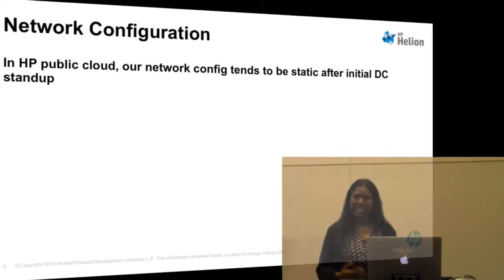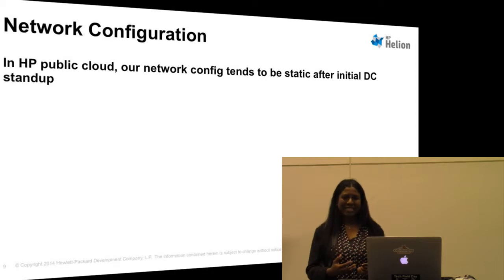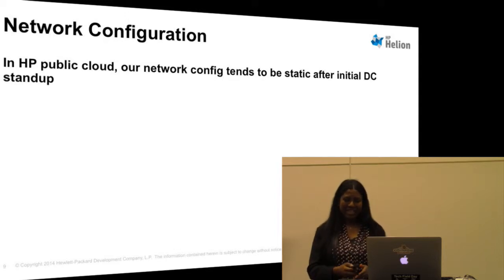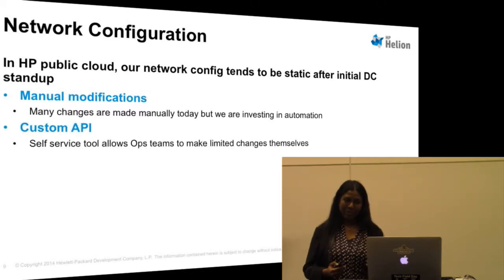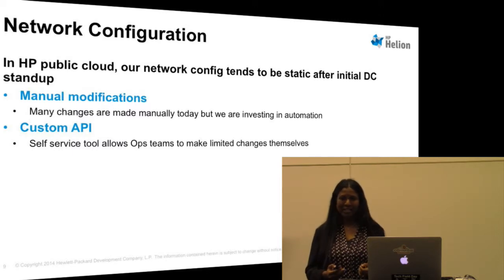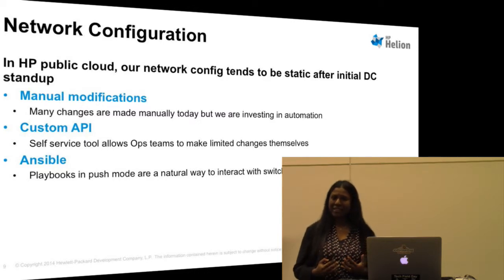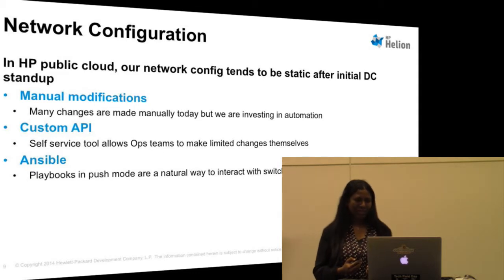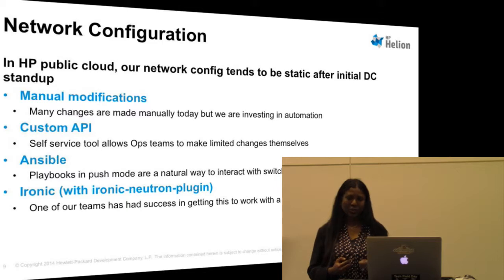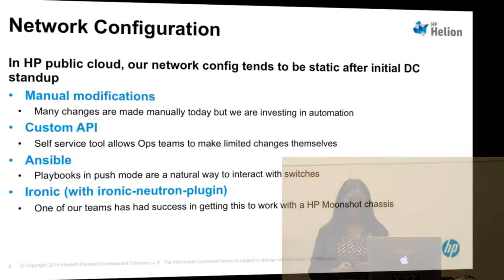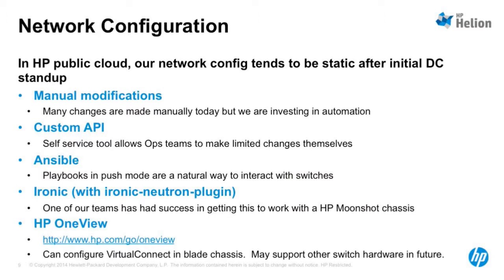On to the network configuration piece. We've observed that on the network config side, a lot of time is spent in design, but once you've designed a data center or cluster, changes are pretty minimal, so much of it is today done manually. We are investing in self-service tools that enable people to make small changes — for example, a load balancer self-service tool to add a node to a load balancer. We're also using Ansible to orchestrate network automation, especially around configuring VLANs. Ironic itself can be used in this space with the Ironic Neutron plugin, and HP OneView has really good network automation especially when blades are used.